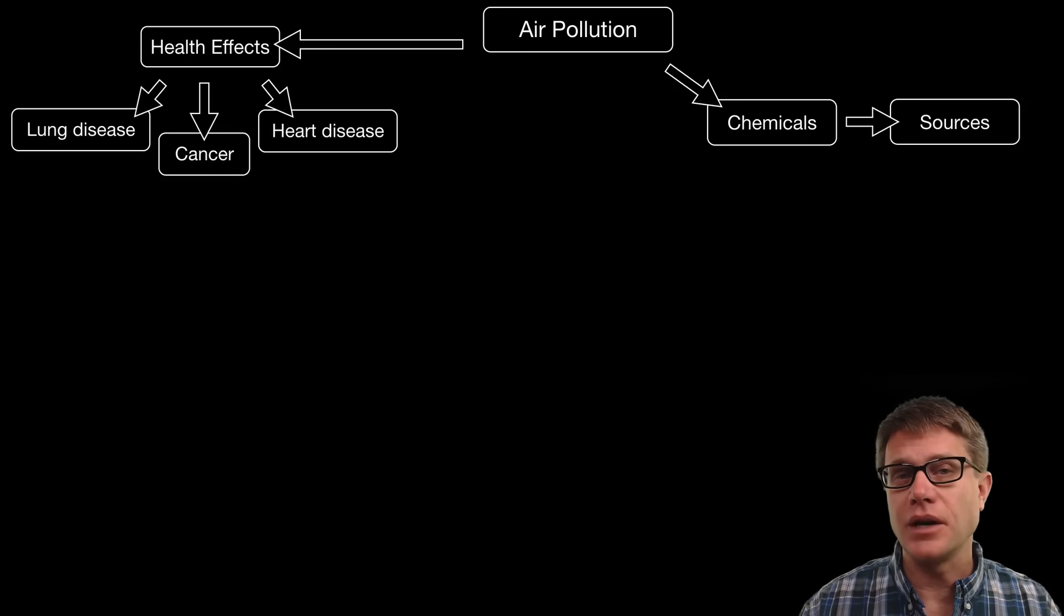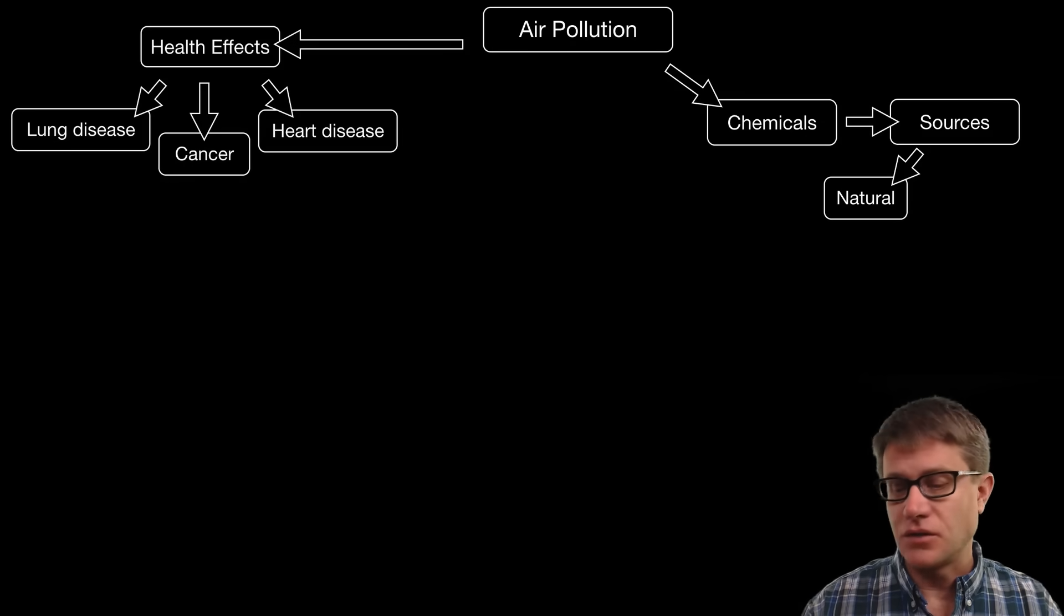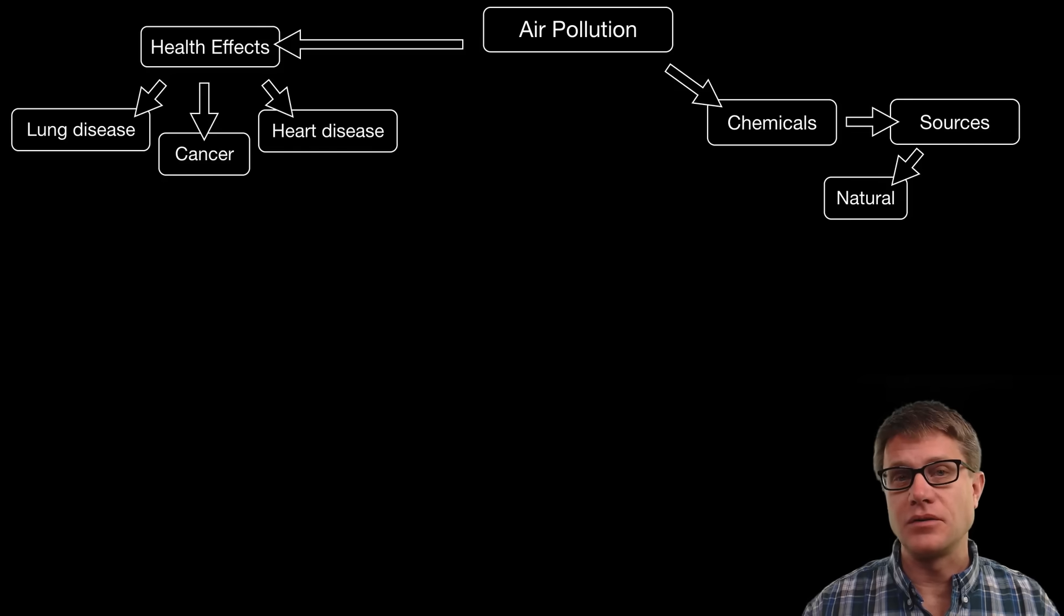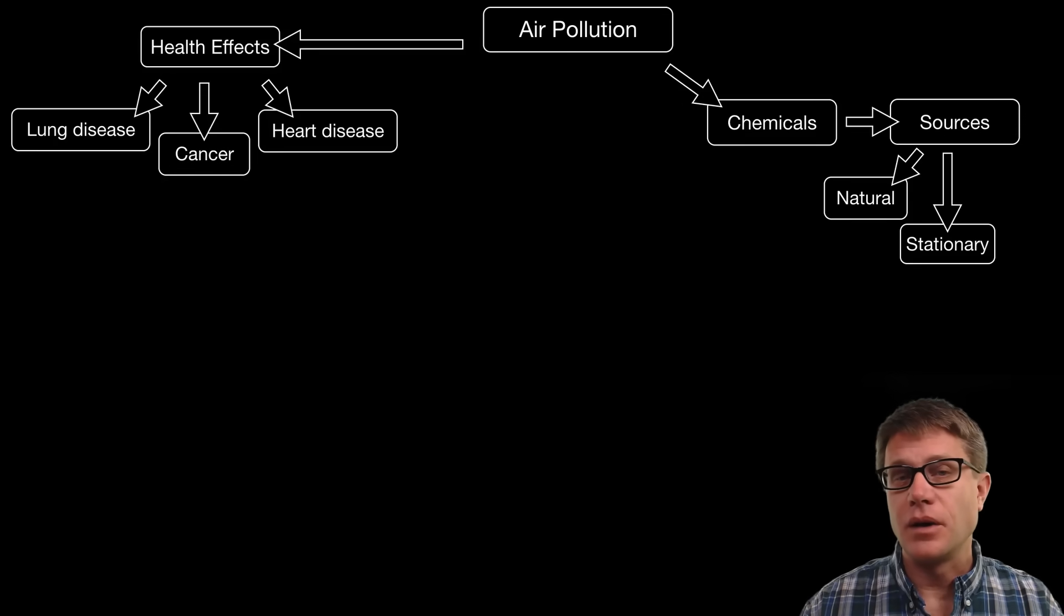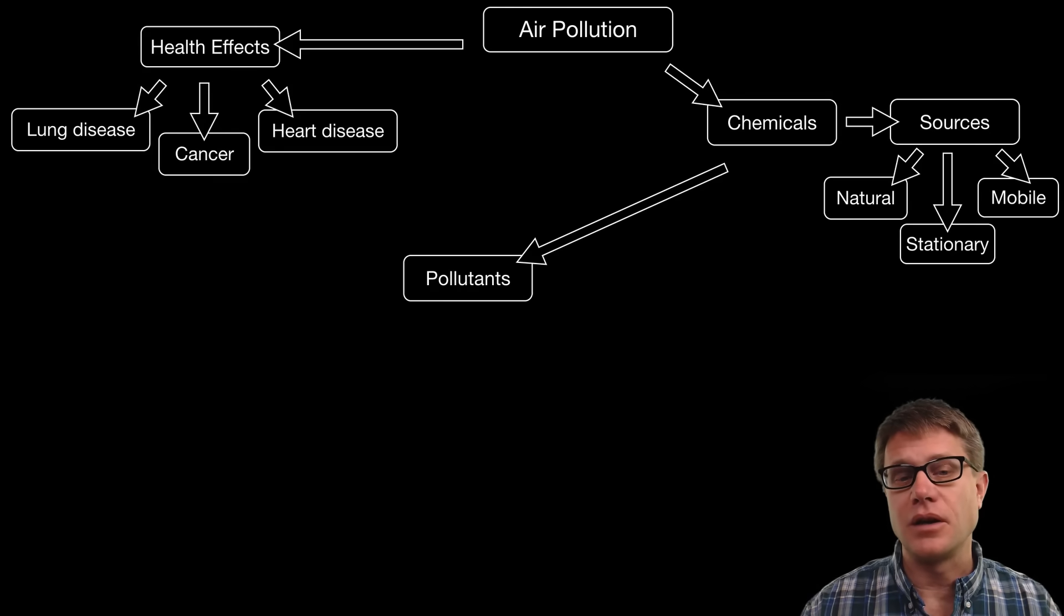Where are these chemicals coming from? Well they can be produced naturally. And so we have forest fires and volcanoes that can produce these pollutants. But also we have stationary sources. You can think of those as industrial like factories. And then we have mobile sources. That would be like cars and buses. And so if they are affecting us negatively we call these pollutants.